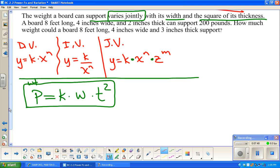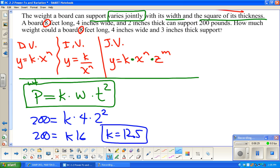A board eight feet long, four inches wide, and two inches thick can support 200 pounds. The length is going to stay the same. So, 200 equals k times 4 times 2 squared. Four times four is 16. So, k would equal 200 divided by 16, which is 12.5.